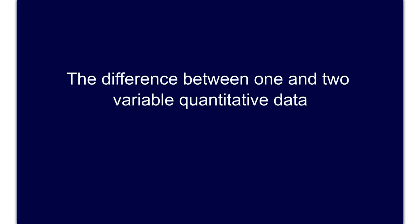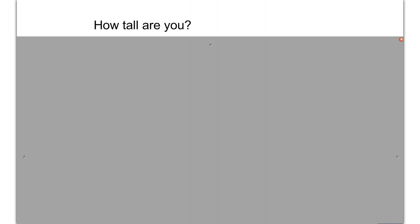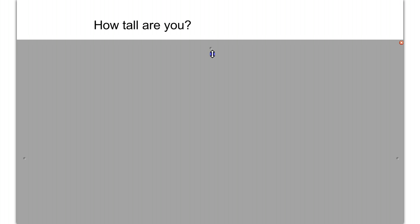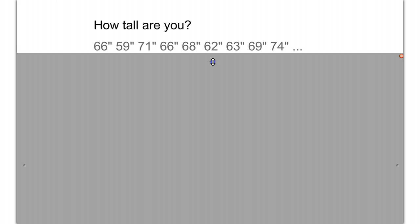Let's look at the difference between one and two variable quantitative data. If I were to ask you how tall you are, I'm asking you a single question with a single answer — I just want your height, let's say in inches. You would give me an answer like 66 inches, 59 inches, and so forth.